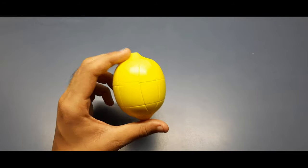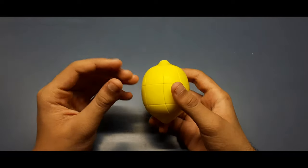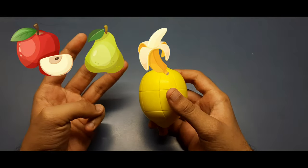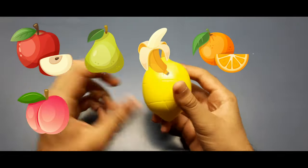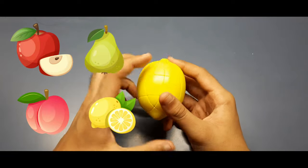So this is one fruit cube which is the lemon, and there are others like apple, pear, banana, orange, peach. And this is the lemon including it. There are total six cubes. So I'll give the links in the description if you want to buy.